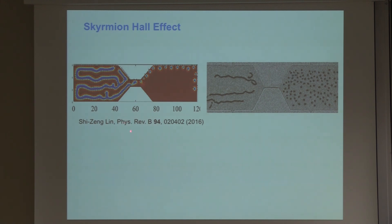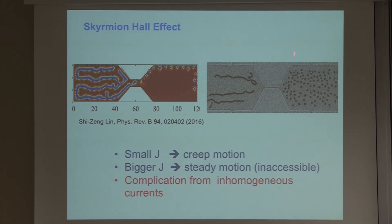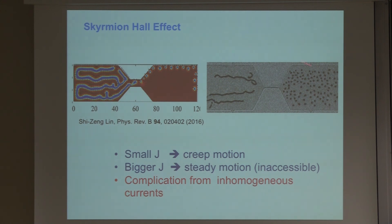Xizhang Ling in Los Alamos performed micromagnetic simulations using the geometry of our constricted wire along which current flows. His simulations showed that skyrmions should be moving towards the top of the wire. However in the images I showed you, that's not what we saw experimentally. Our conclusion was basically that the motion of our skyrmions was so slow — or the current driving them was still low enough — that they were in the creep regime. So the skyrmions were not moving in steady flow, meaning local pinning sites dominated their position and motion. Additionally we realized this geometry wasn't ideal because of inhomogeneous currents.